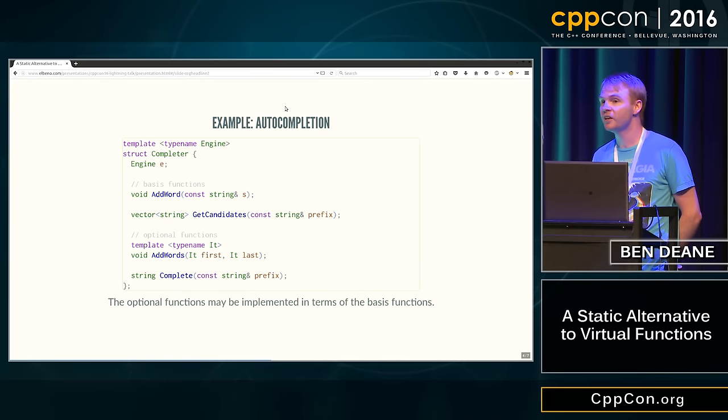And then in the extended set, we might want to also provide functions to say add a bunch of words, because it might be faster to add a bunch of words at one time, and complete as far as is unambiguous. So if all the words, all of my candidate completions start with the same prefix, I can complete as far as that prefix goes.